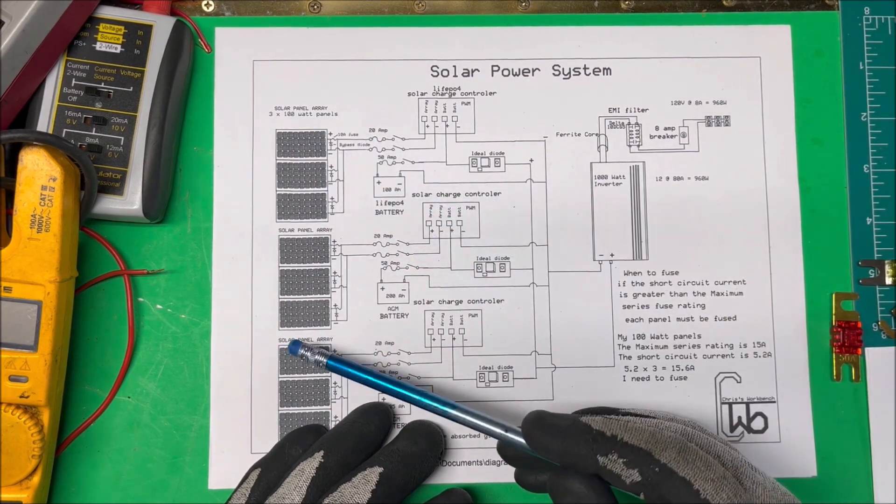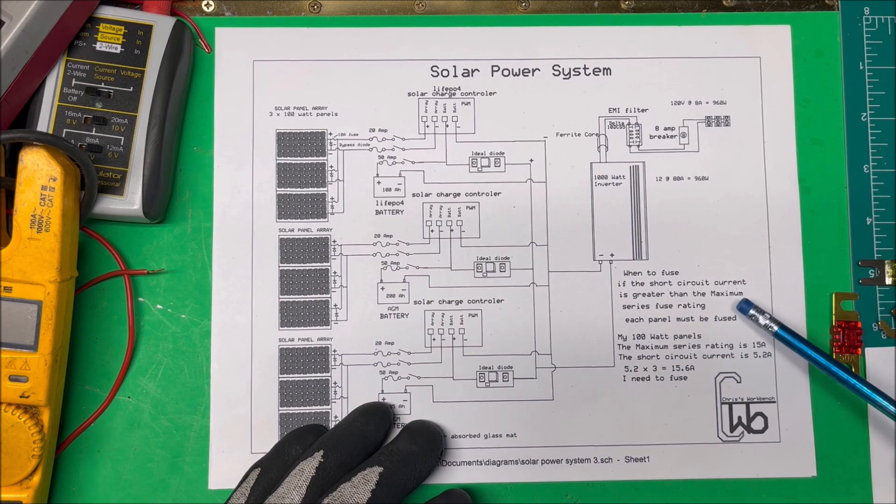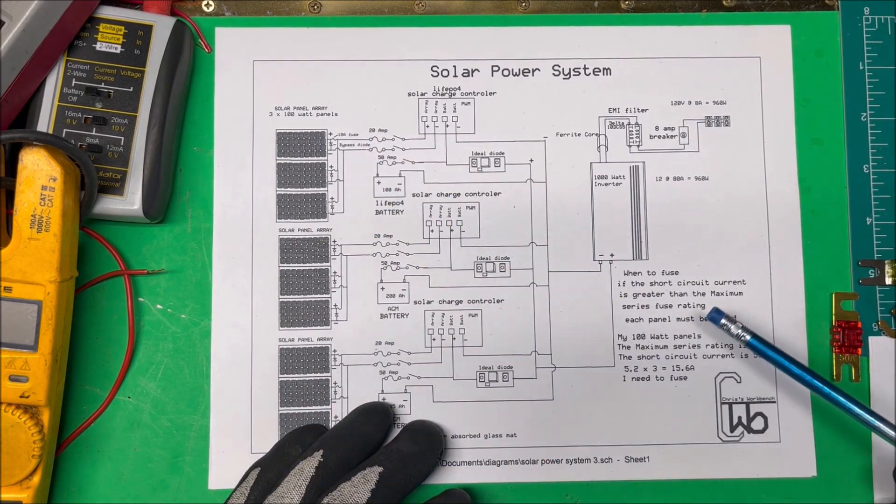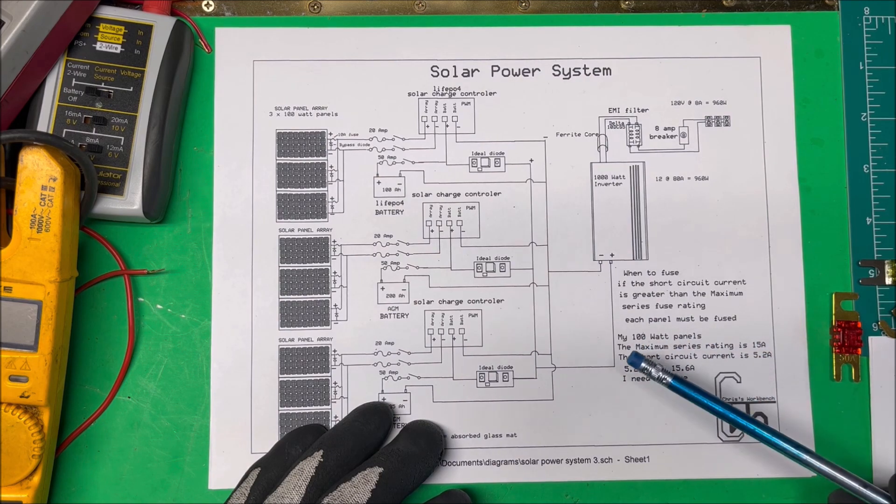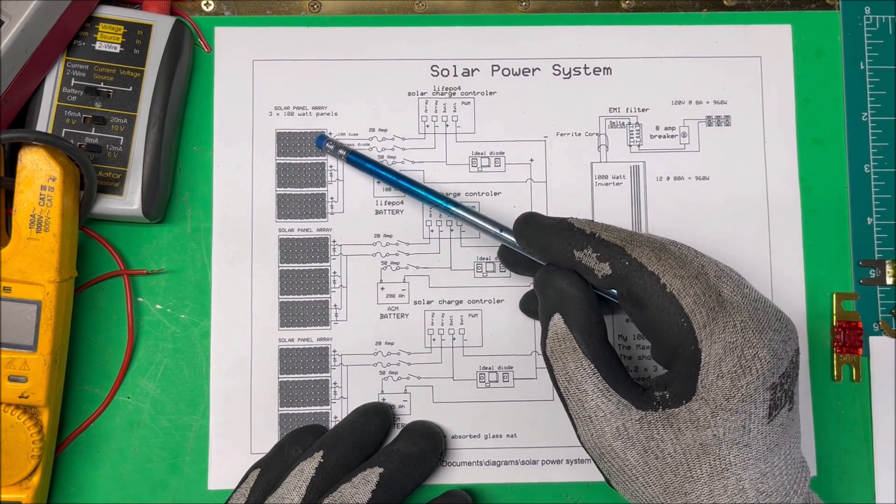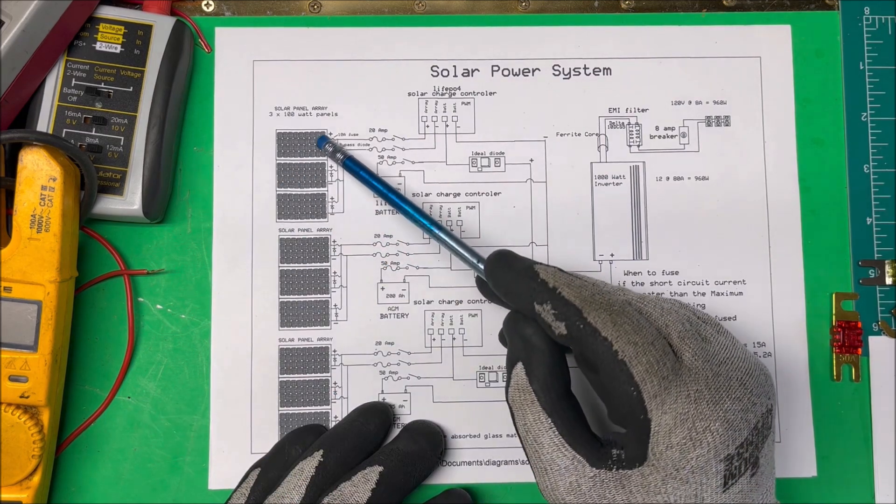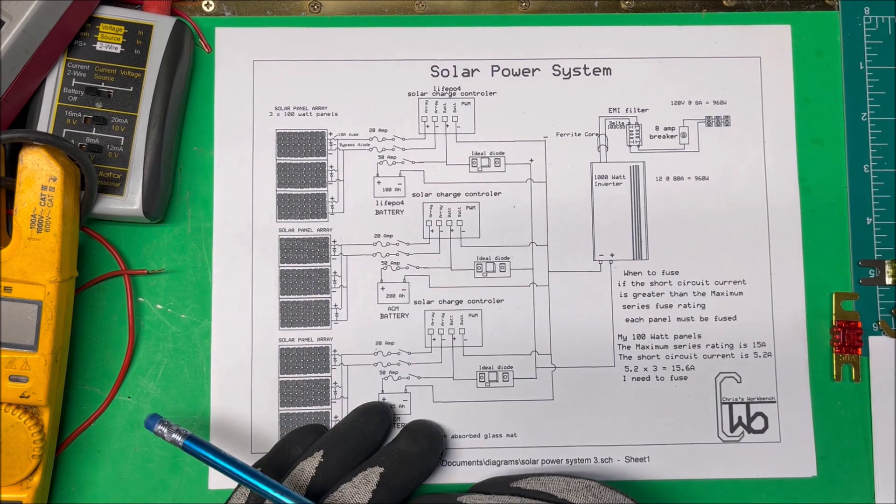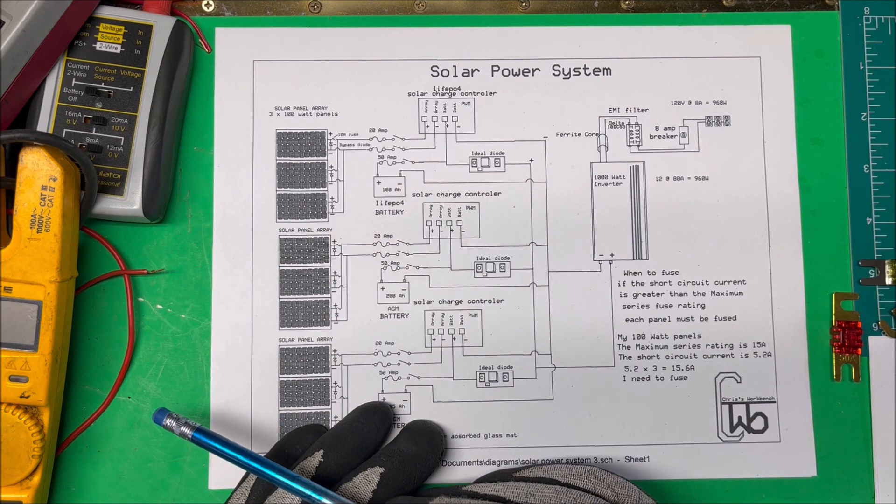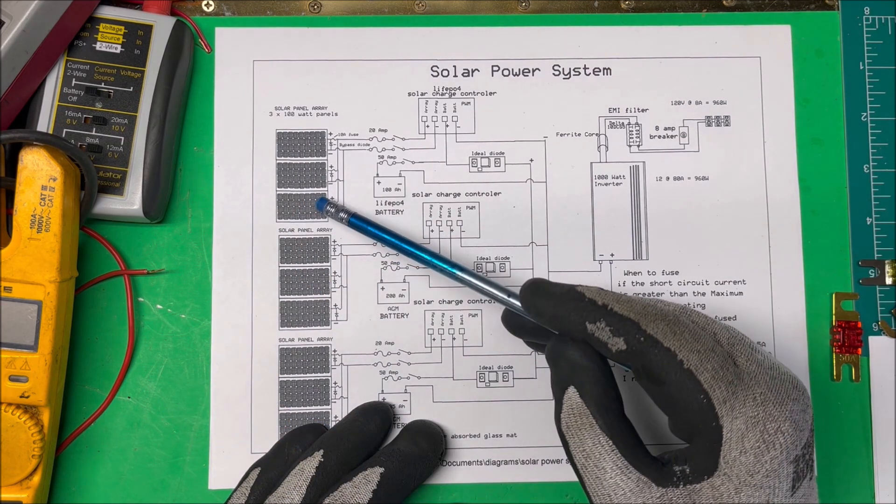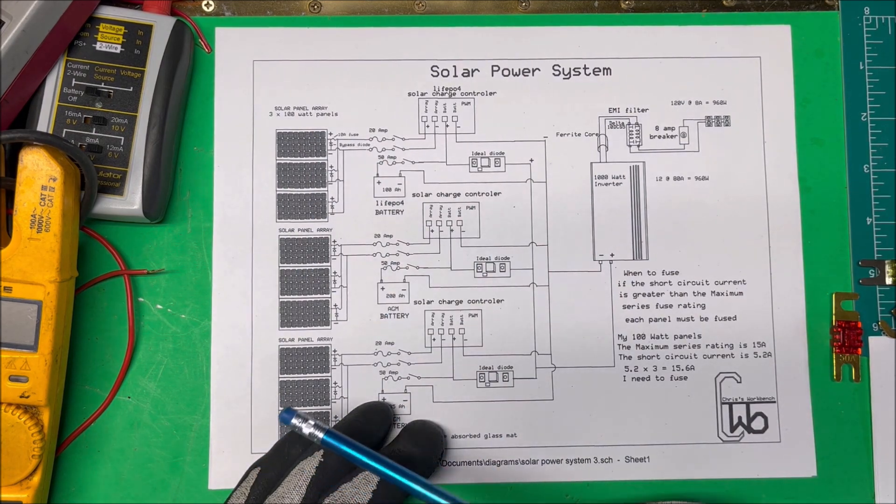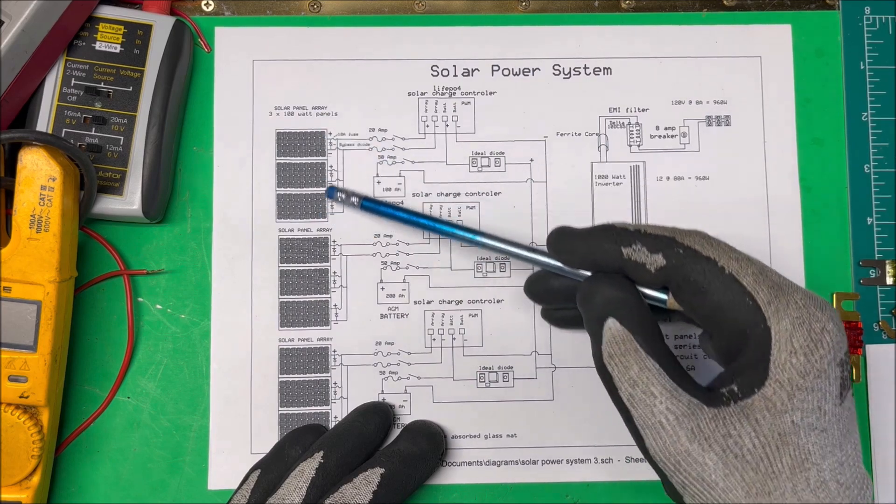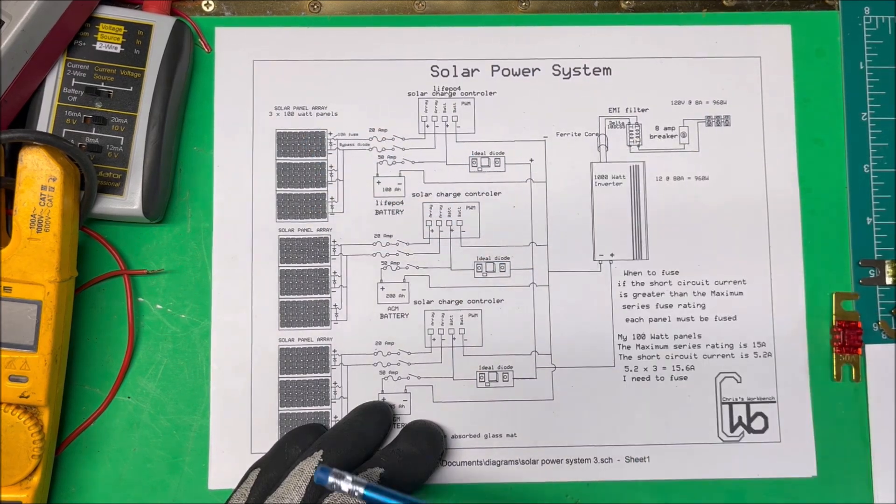If it's greater than the maximum series fuse rating which is on the back of the panel, then each panel must be fused. So in this case I have a 100 watt panel and it says that its short circuit current is 5.2 amps and the maximum series fuse rating is 15 amps. I've got three panels so that comes out to 15.6 amps. So technically I should fuse all these because it's greater than the 15 amps.